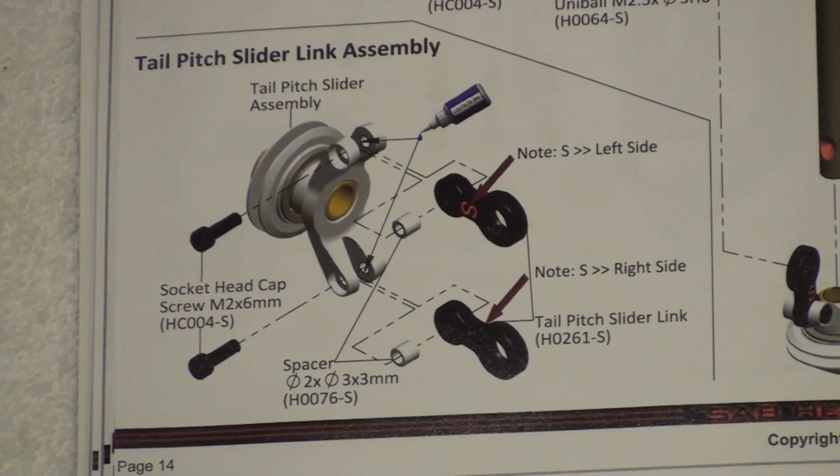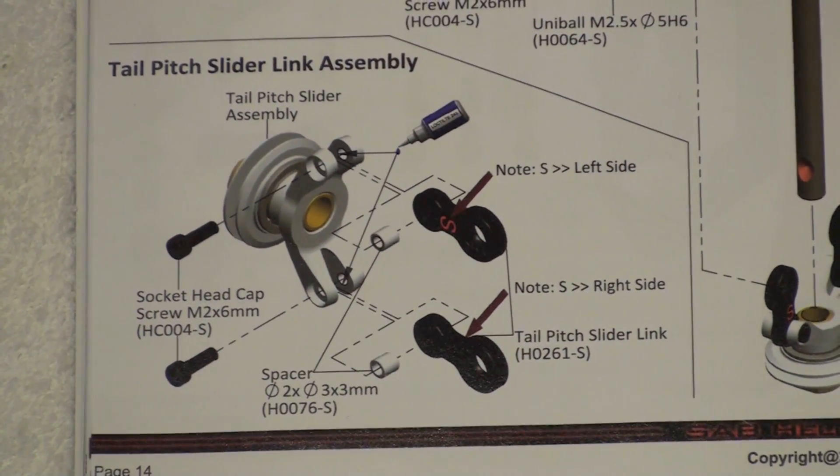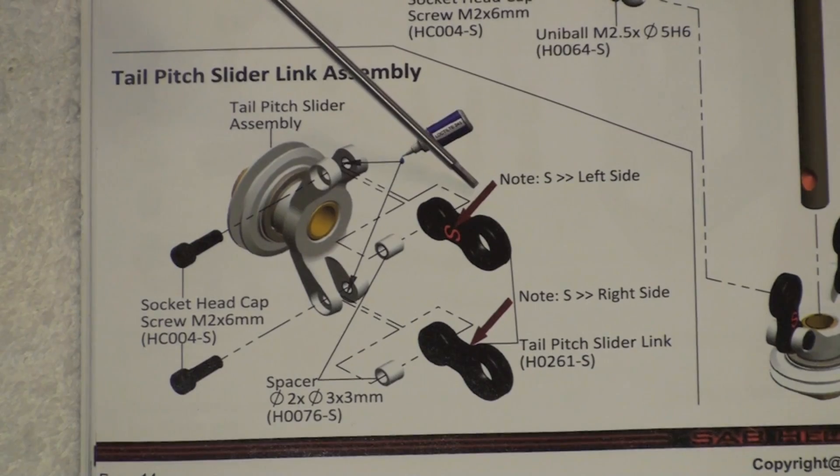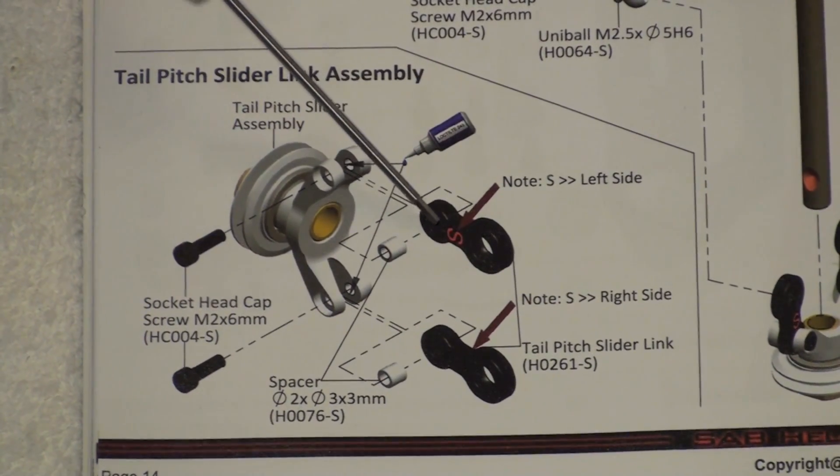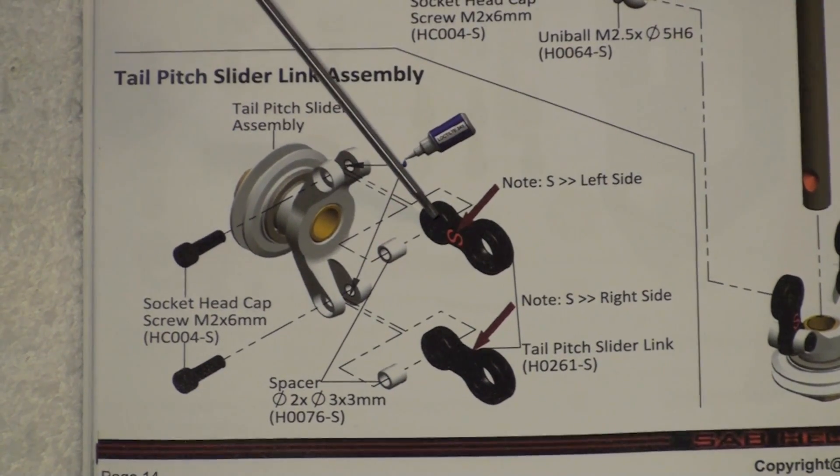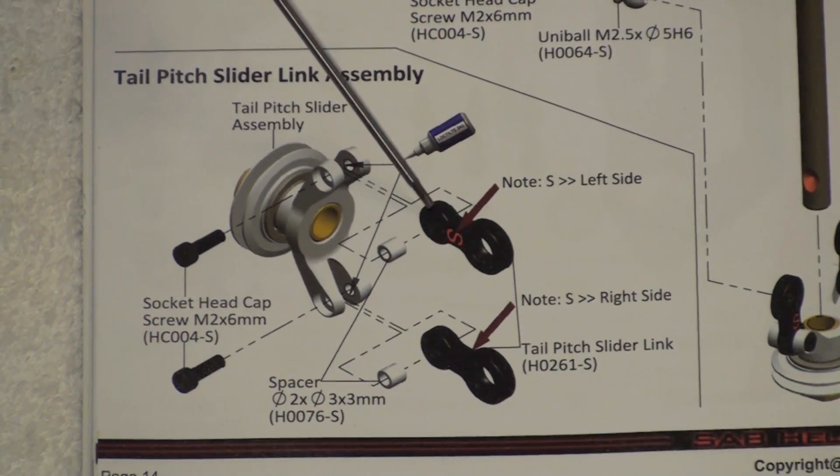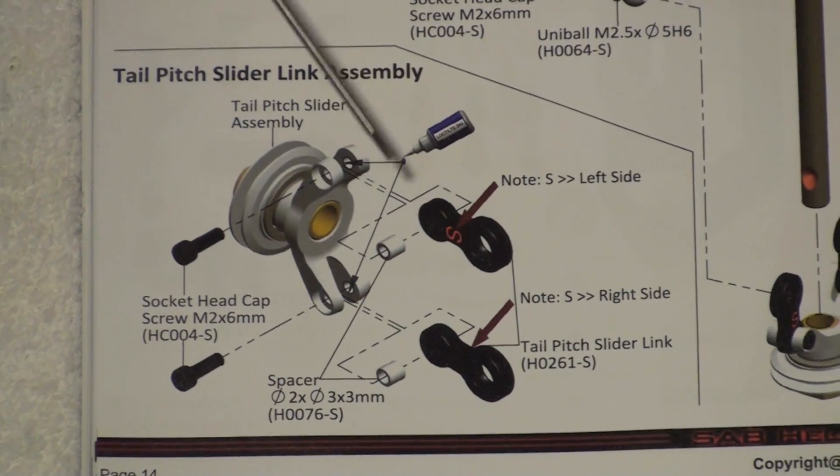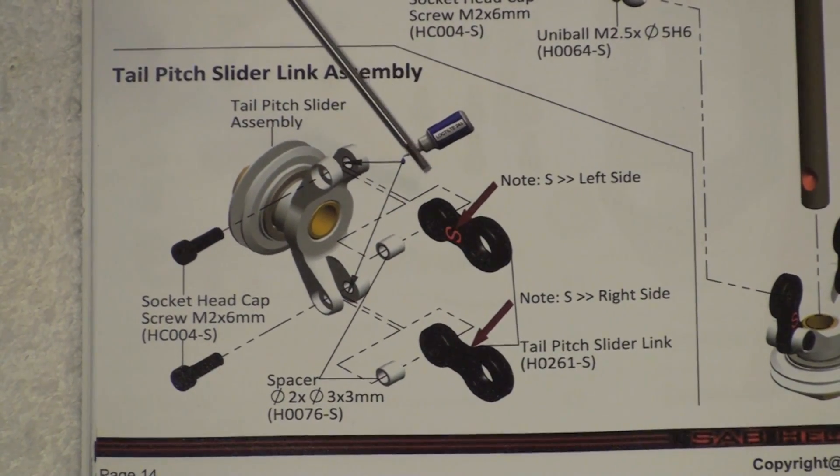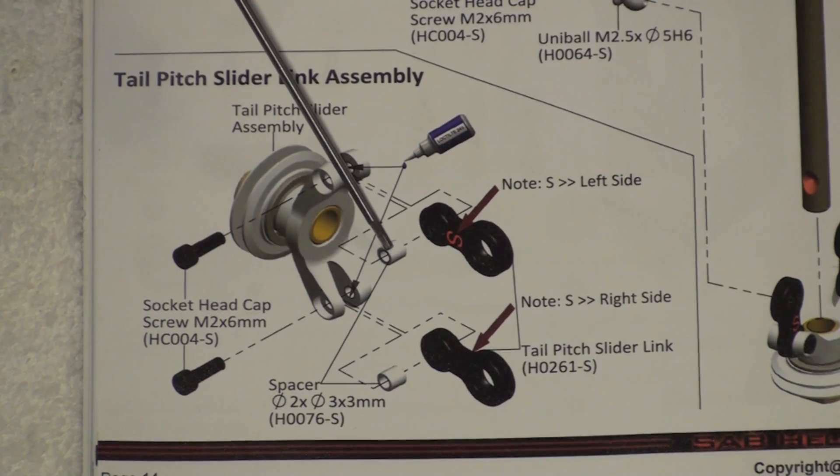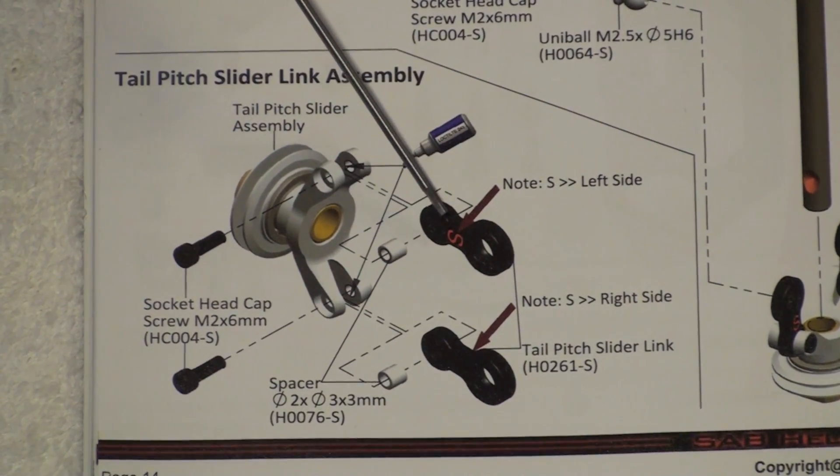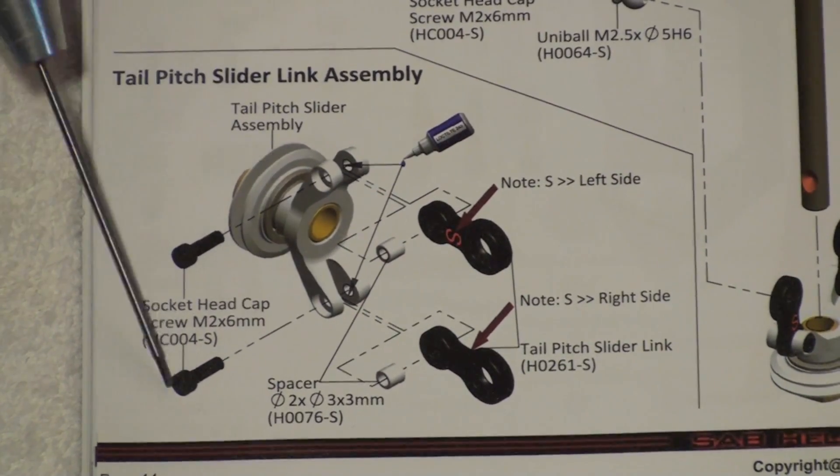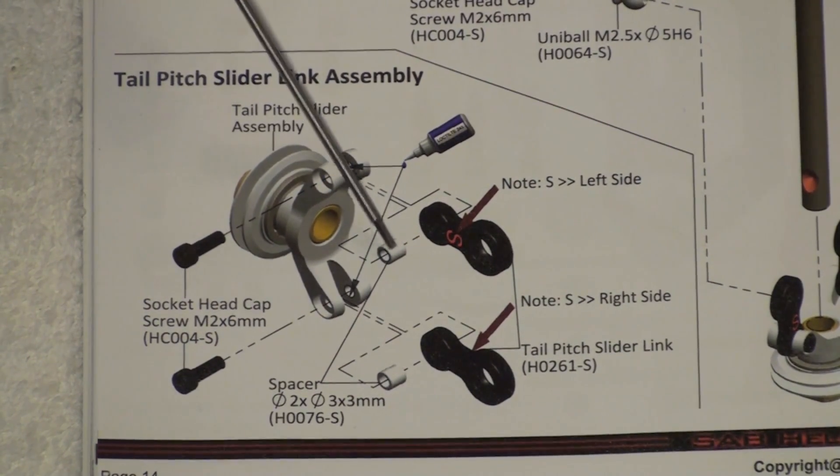Now we're going to get our pitch slider together and put that on there and see what that looks like. So as we look at the manual here with the tail pitch slider, on this link here, the letter S, in which orientation that needs to go. So pay special attention to that. You might skip over that in the manual. It is highlighted in red with a little arrow next to it, so you should be able to see that just fine. Make sure and get this spacer installed in here as well. Don't just put this link inside with the bolt, make sure and get that spacer in there as well.